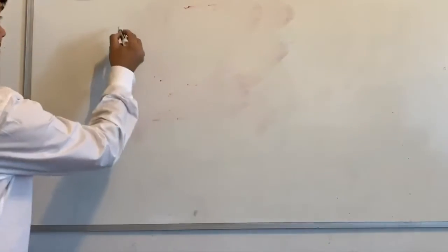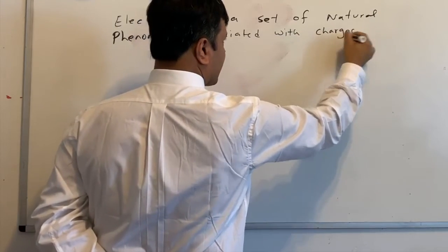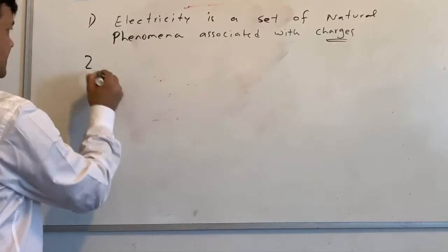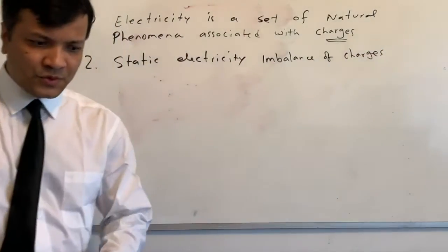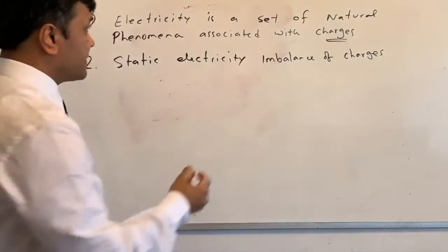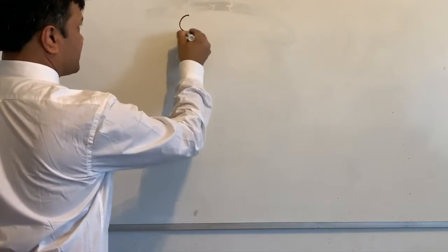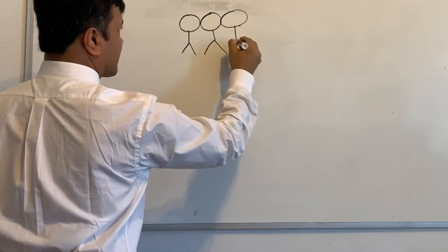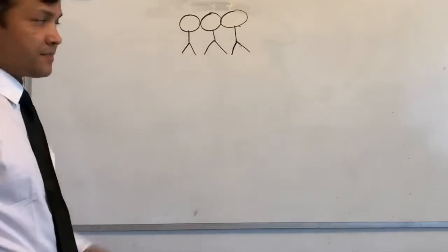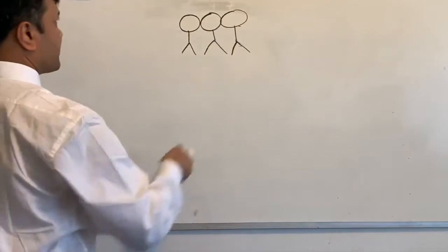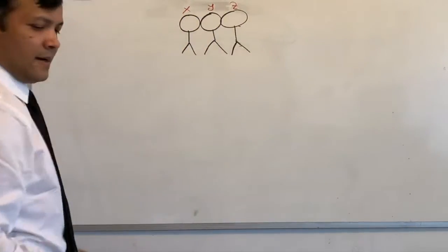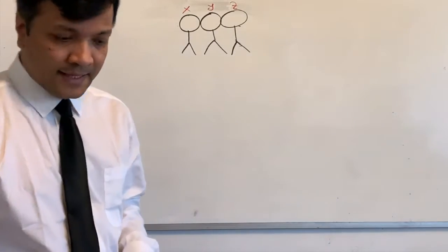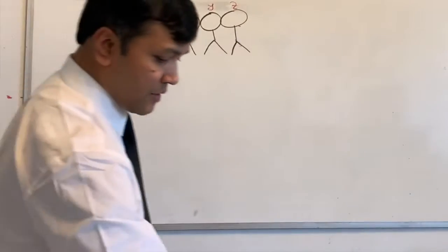Alright, this is a course on electricity - static electricity. How can you create an imbalance of charge? I'm going to give you three metal spheres. They are touching each other; I'll call them X, Y, and Z. These three metal spheres are now neutrally charged - this is scenario one. Now I'm going to draw scenario two.